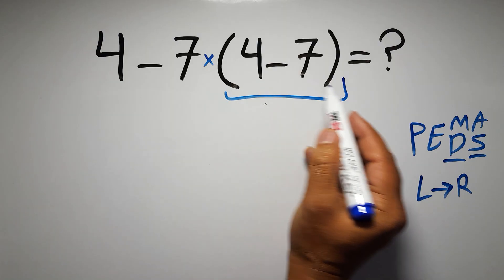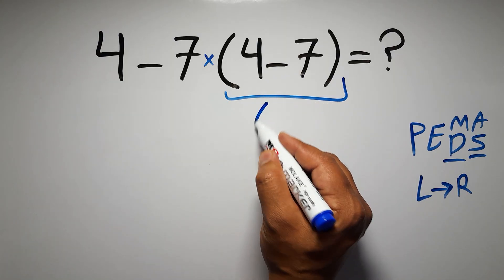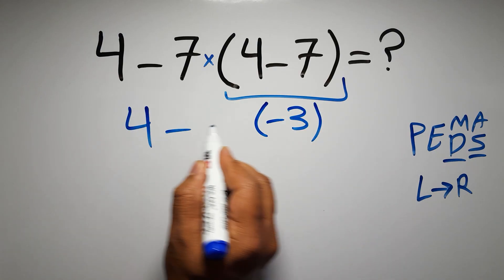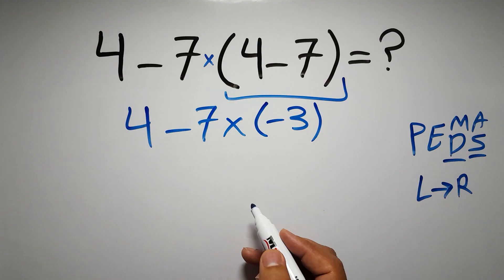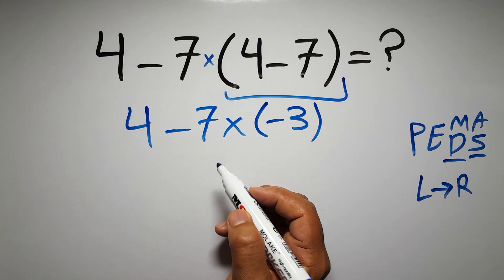So first this parentheses: inside this parentheses we have four minus seven, which equals negative three. So four minus seven times negative three. Now we have one subtraction and one multiplication.